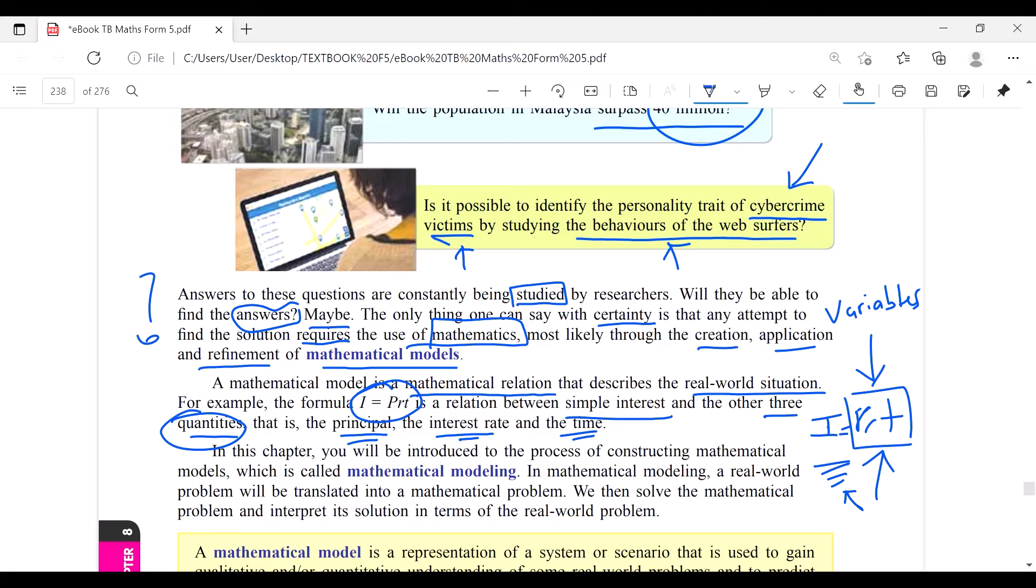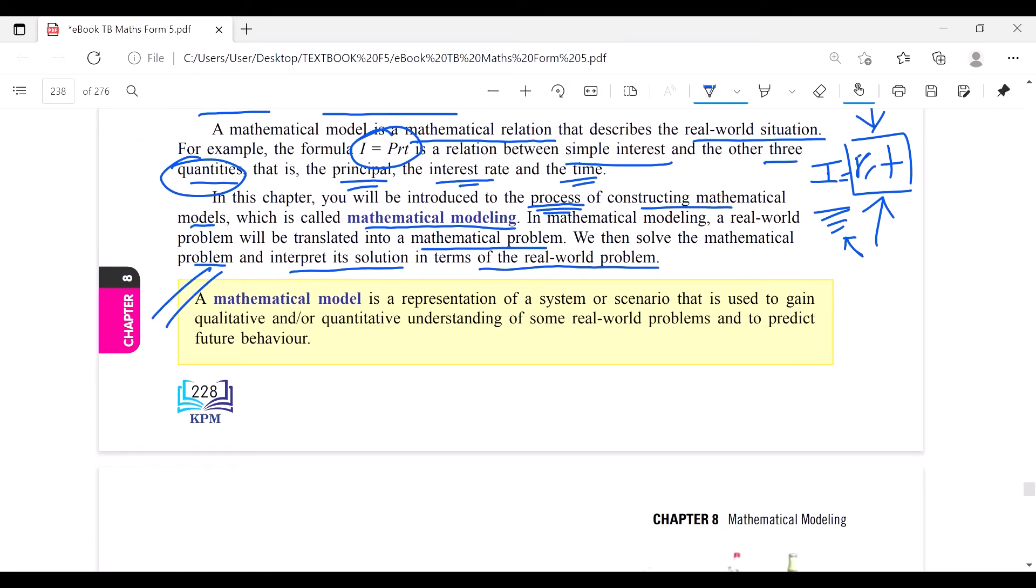In this chapter we'll introduce you the process. The process is very important. We teach you the process of constructing a mathematical model, which is called mathematical modeling. So in the real world problem will translate into a mathematical problem, and then we can solve the problem and interpret its solution. In short, the mathematical model is a representation of a system or scenario that is used to gain qualitative and quantitative understanding in the sense of some real world problems and to predict future behavior.